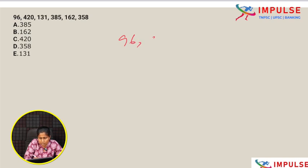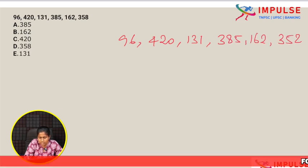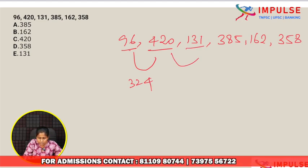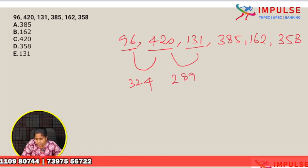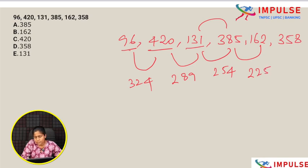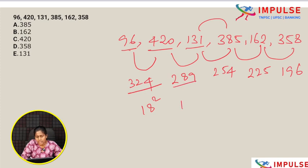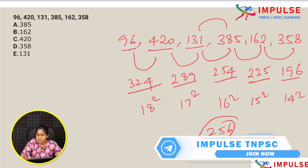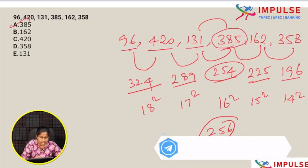Next question: 96, 420, 131, 385, 162, 358. Looking at differences between alternating numbers: first and second number difference is 324, second and third is 289, third and fourth is 425 — wait, 324 is 18 square, 289 is 17 square, then 16 square is 256. So 385 should be 387. Wrong number is 385. Option A.